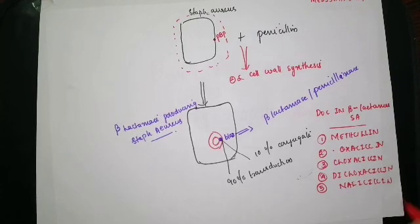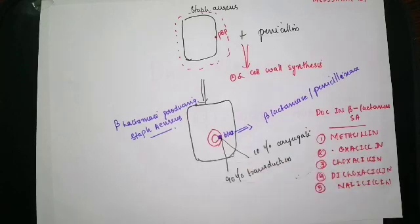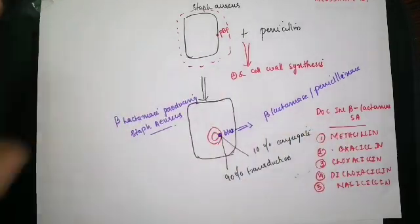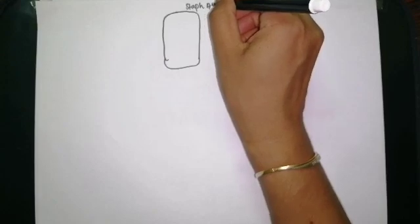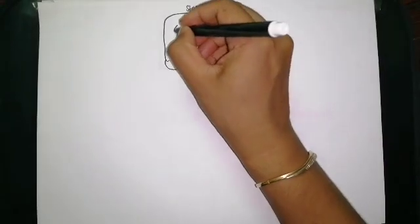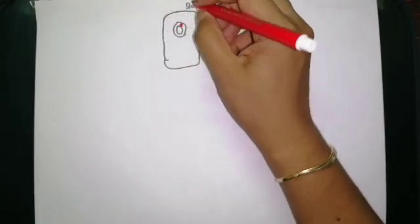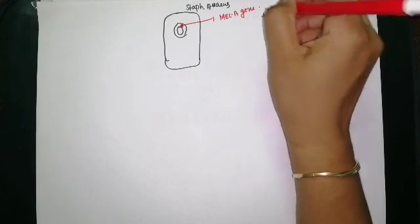With the use of methicillin and related drugs, the bacteria again became resistant. The Staph aureus acquired a new gene — this time in its chromosomal DNA, not a plasmid. This gene is known as the mecA gene.